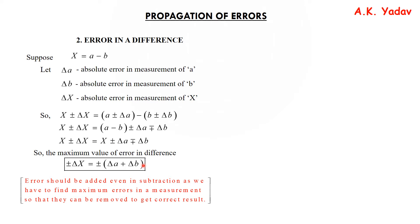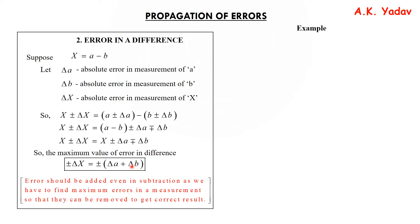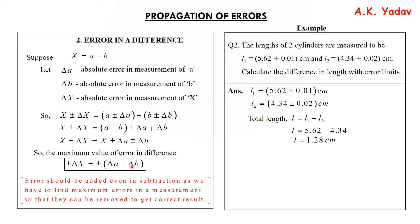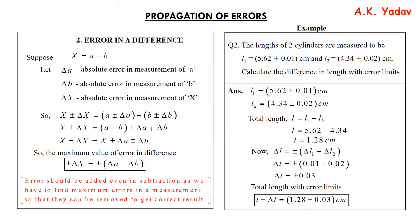Whether it is addition or subtraction, the error has to be added — that's why it is ±(δa + δb). Let's take an example with the same two cylinders. The difference: l = l₁ − l₂ = 5.62 − 4.34 = 1.28 cm. With lengths we subtracted, but in error we add: δl = ±(0.01 + 0.02) = ±0.03 cm. So the total length with error limits is 1.28 ± 0.03 cm.